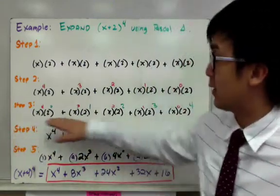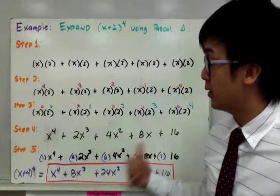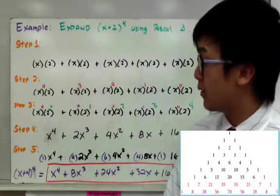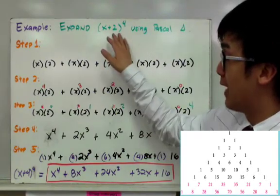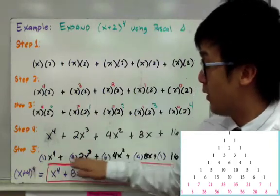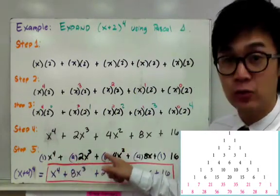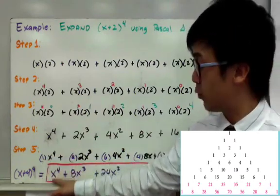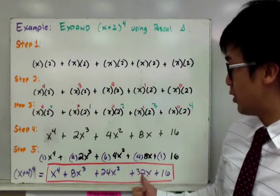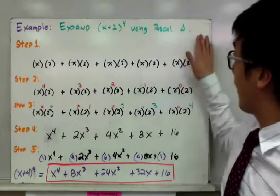Step 4 simplifies your exponents so you can multiply each term by the Pascal's Triangle coefficients in step 5. For a level 5 expansion — exponent raised to 4 — the Pascal's Triangle values are 1, 4, 6, 4, 1. So for the final step we multiply: 1 times x to the 4th gives x to the 4th; 4 times 2x cubed gives 8x cubed; 6 times 4x squared gives 24x squared; 4 times 8x gives 32x; and 16 stays as 16. This is how we expand (x + 2)^4 using Pascal's Triangle.